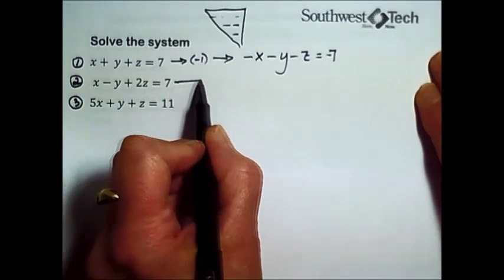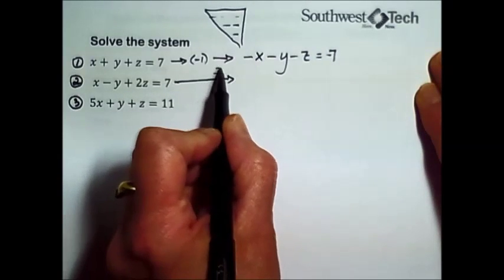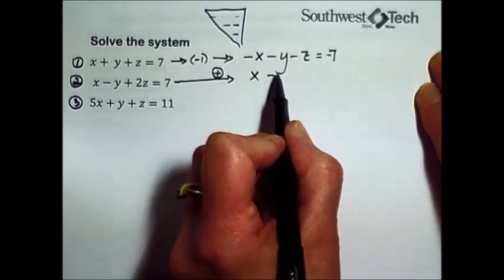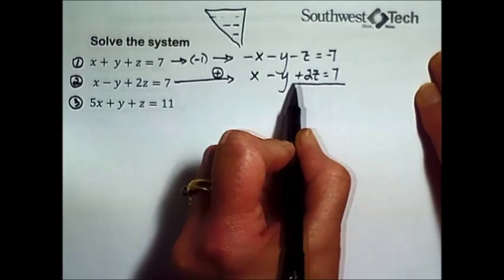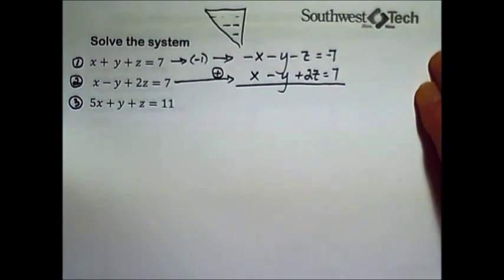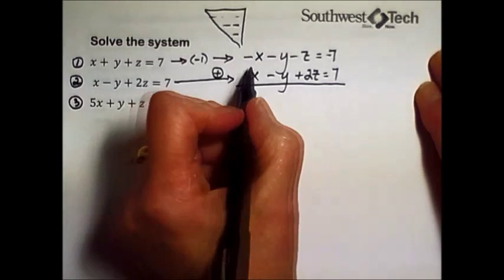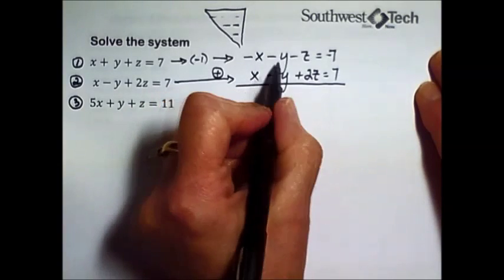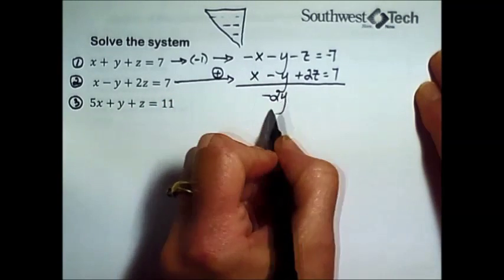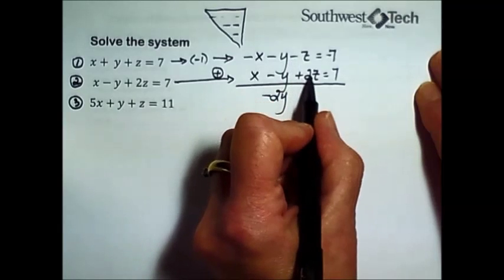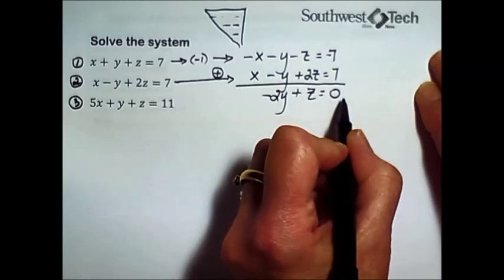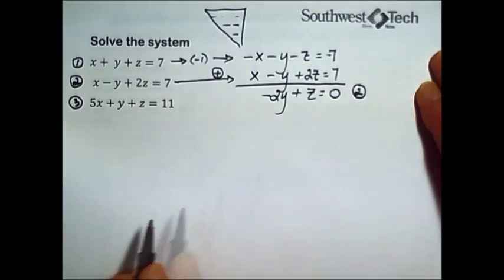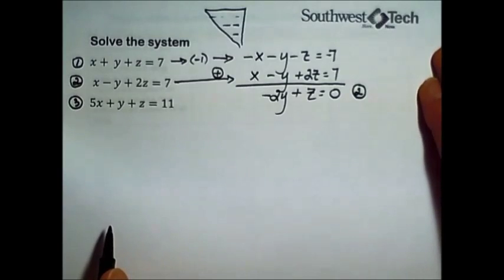I'm then going to simply add it to the second equation. This result will be called our new equation number two. When we add, the x's are gone, negative one plus negative one is negative two y, negative one plus two is positive one z, and the sevens cancel one another out. So this is now the new equation two.